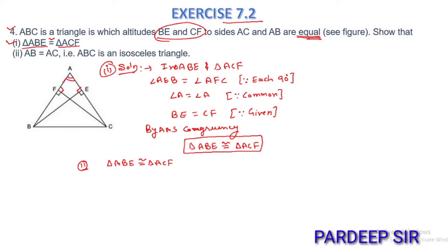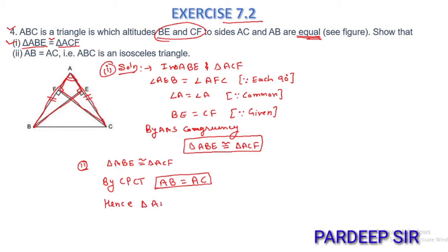Now for the second part, you have proved that triangle ABE is congruent to triangle ACF. Since these two triangles are congruent, by corresponding parts of congruent triangles (CPCT), AB is equal to AC. If two sides of a triangle are equal, hence triangle ABC is an isosceles triangle.